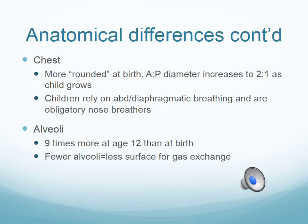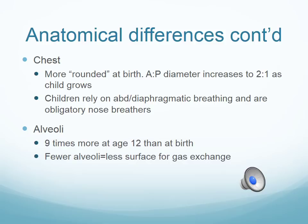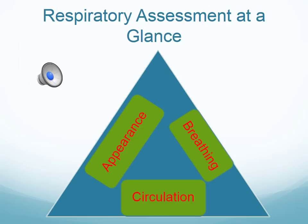Infants are born with a lot fewer alveoli — we have nine times more alveoli as adolescents and adults than at birth. Fewer alveoli means less surface area for gas exchange. Preemie and NICU infants also have issues with alveoli because of the lack of surfactant production, which usually develops in utero somewhere after 25–26 weeks. Surfactant production starts around 25 weeks but doesn't really work effectively until after 32–33 weeks, which is why we often have to give surfactant to preterm babies.